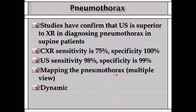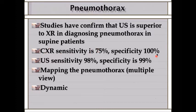Studies have shown ultrasound is superior to X-ray—we rarely do an X-ray in our NICU. X-ray sensitivity for pneumothorax is 75% with 100% specificity, but ultrasound is more sensitive and also has very good specificity.